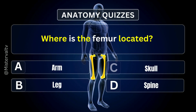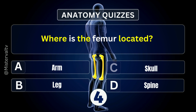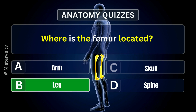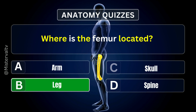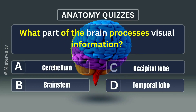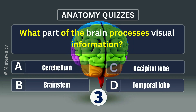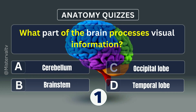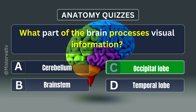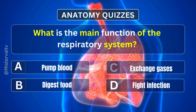Where is the femur located? Answer. B. Leg. What part of the brain processes visual information? Answer. C. Occipital lobe.